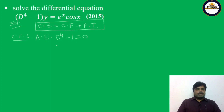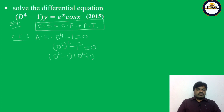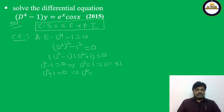D⁴ - 1 = 0 can be written as (D²)² - 1² = 0. This is like a² - b², so using the formula (a+b)(a-b), we get (D² - 1)(D² + 1) = 0. From D² - 1 = 0, D² = 1, so D = ±1. From D² + 1 = 0, D² = -1 = i², so D = ±i. The roots are: -1, +1, and ±i.